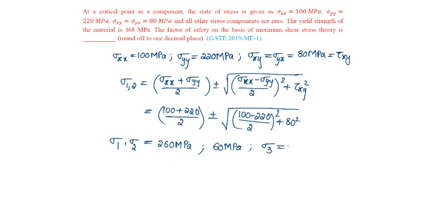We know from the maximum shear stress theory, tau max should be less than or equal to fy by f, that implies sigma 1 minus sigma 3 by 2 should equal fy by 2f. The 2 gets cancelled.